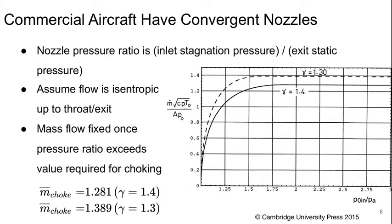We'll start by talking about nozzles. This is maybe the easiest component because there are no chemical reactions taking place and no moving parts. Commercial aircraft always have convergent nozzles as opposed to convergent-divergent nozzles. In the case of a convergent nozzle, the nozzle pressure ratio is defined as the inlet stagnation pressure to the exit static pressure ratio. We'll assume the flow is isentropic up to our throat, which is also our exit.